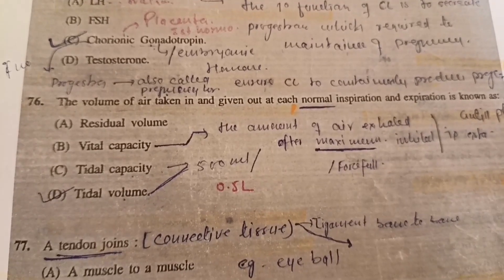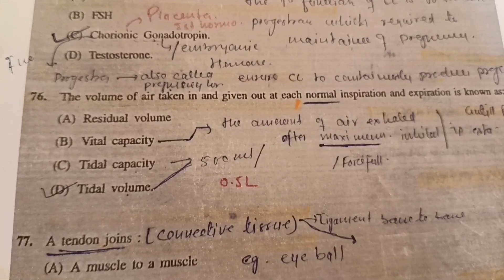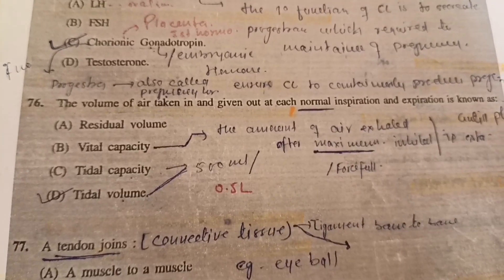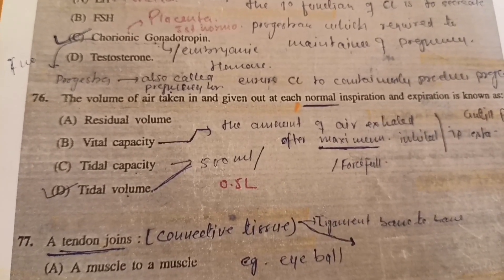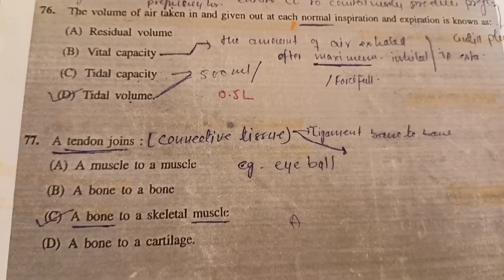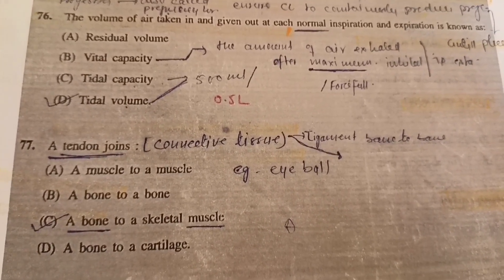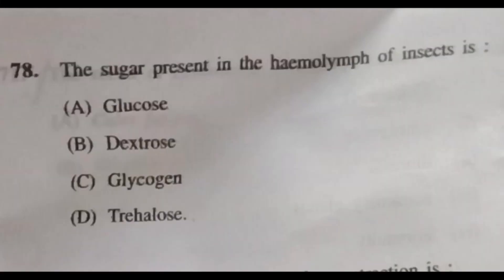Question 76: The volume of air taken in and given out at each normal inspiration and expiration is known as — D, tidal volume. Question 77: A tendon on joints — answer will be C, bonds a skeletal muscle. Question 78: The sugar present in the haemolymph of insects is — answer will be D, trehalose.